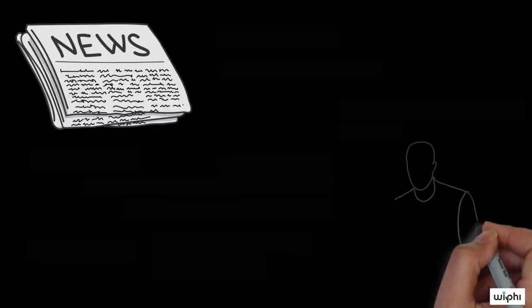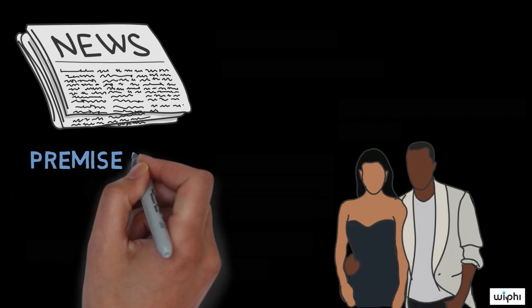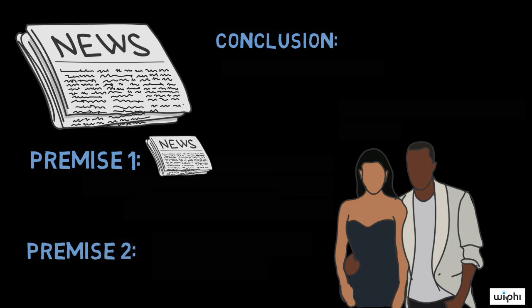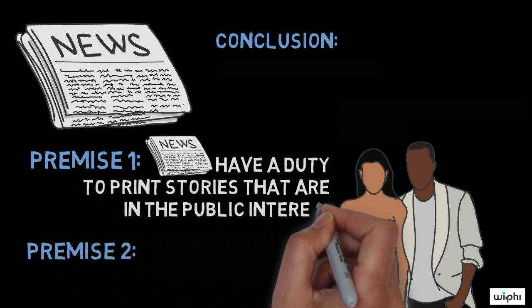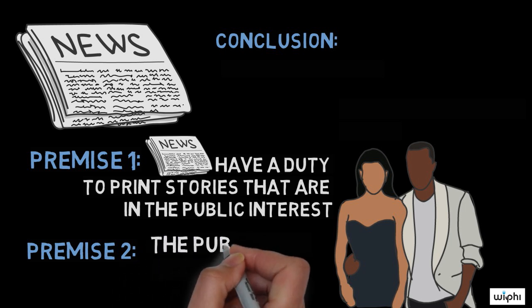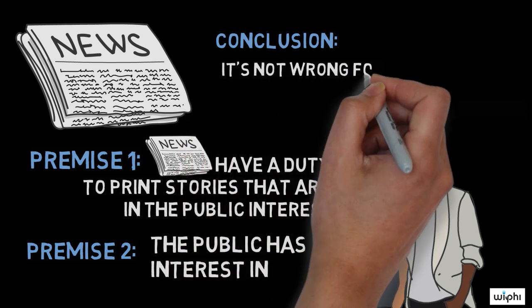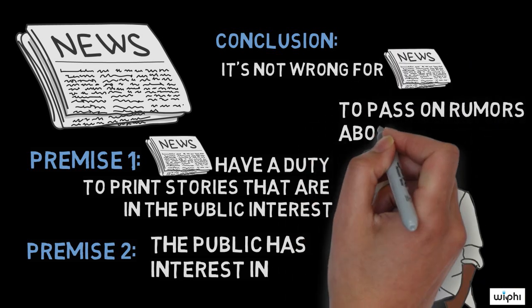Suppose a respectable newspaper was criticized for spreading celebrity gossip, and suppose that, in response, the editor gave the following argument. Premise 1: newspapers have a duty to print stories that are in the public interest. Premise 2: the public has great interest in rumors about celebrities, since circulation increases when newspapers print such stories. Conclusion: it's not wrong for respectable newspapers to pass on rumors about celebrities.